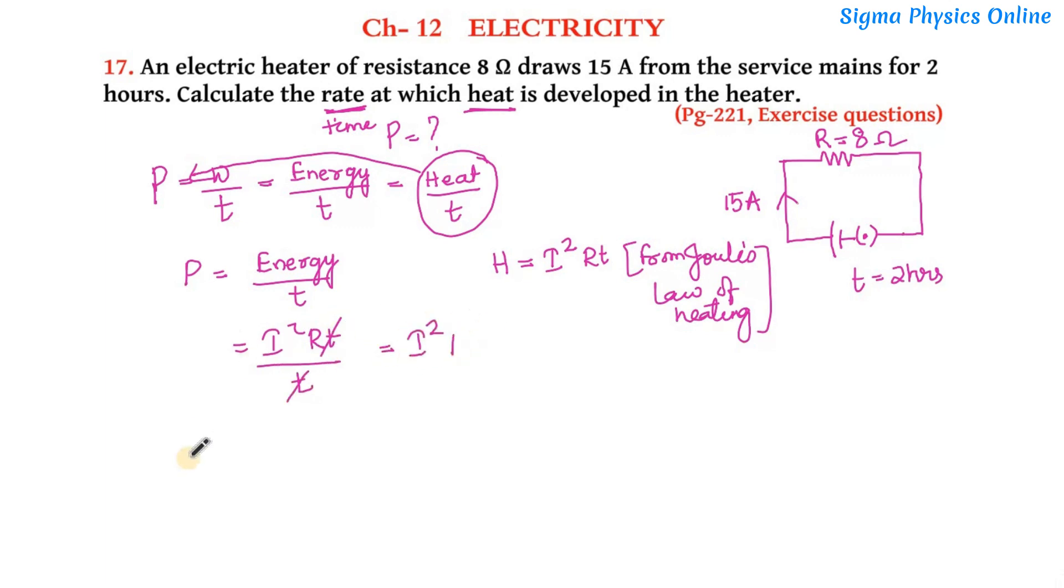So the power rating is given by I²R. Now we'll substitute the values of I and R. I is given as 15 ampere and R is 8 ohm, so it's 15 × 15 × 8 which is 225 × 8, and that's 1800 watt. So the power rating of this electric heater is 1800 watt.